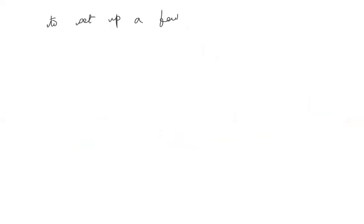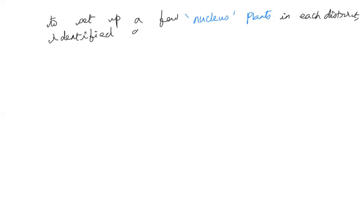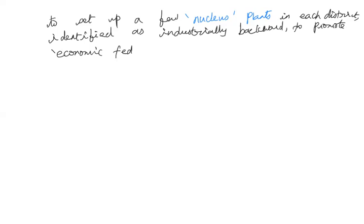The government proposed to set up nucleus plants in each district identified as industrially backward. In those industrially backward districts, the government proposed to set up nucleus plants, thereby promoting economic federalism. Let's assume this is one backward area — the concept of nucleus plants means establishing several units of ancillary, small-scale, and cottage industries in that particular area.